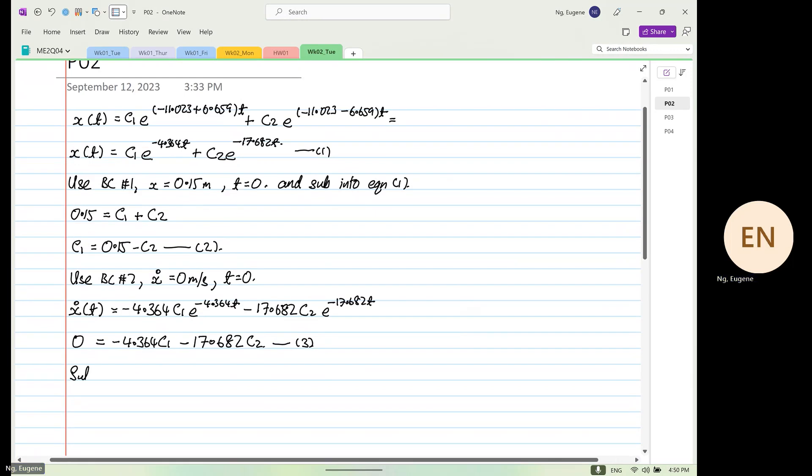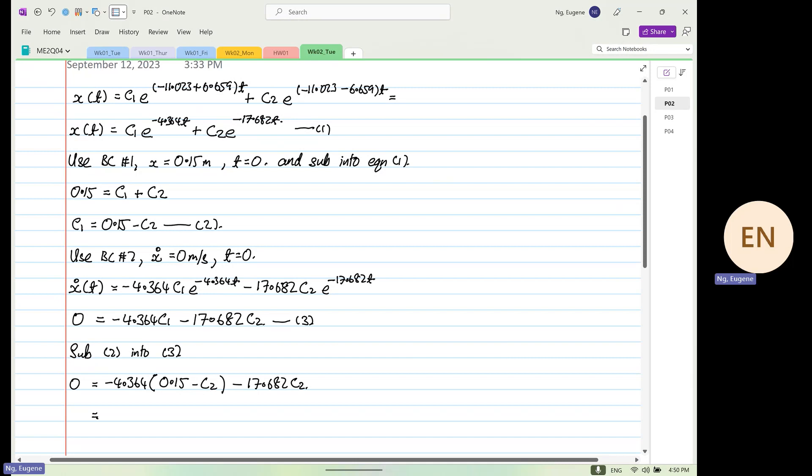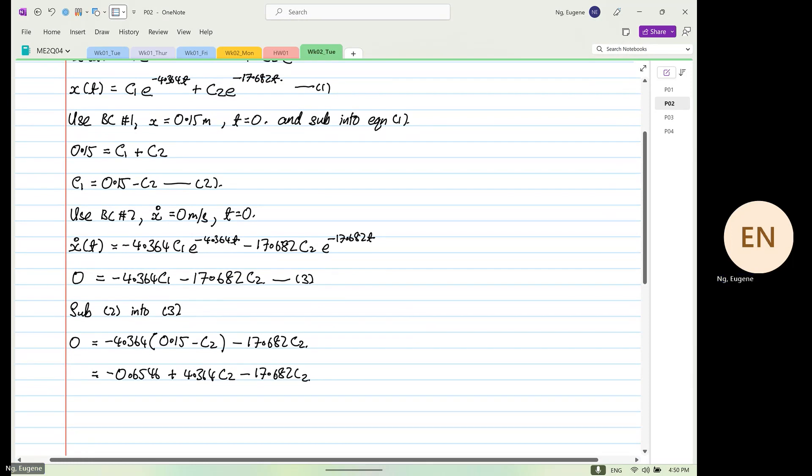This is equal to 0, so we know that time is equal to 0. So this is minus 4.364 c1 minus 17.682 c2. So this is our equation number three. So we are going to substitute equation two into three now. So this is 0 equals minus 4.364 times (0.15 minus c2) minus 17.682 c2. So it works out to minus 0.6546 plus 4.364 c2 minus 17.682 c2. So what we have is 13.318 c2 equals minus 0.6546.